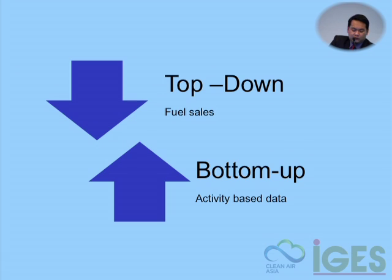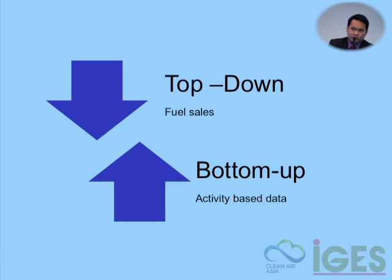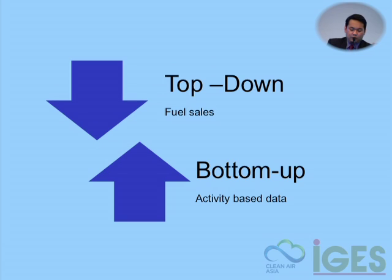Calculating CO2 emissions for transportation generally uses two main approaches: top-down and bottom-up. The top-down approach is based mostly on fuel sales data — relatively easier to obtain. The bottom-up is activity-based: how much travel is done by persons, how many trips per day, where they go, what modes they take — essentially the full ASIF equation.